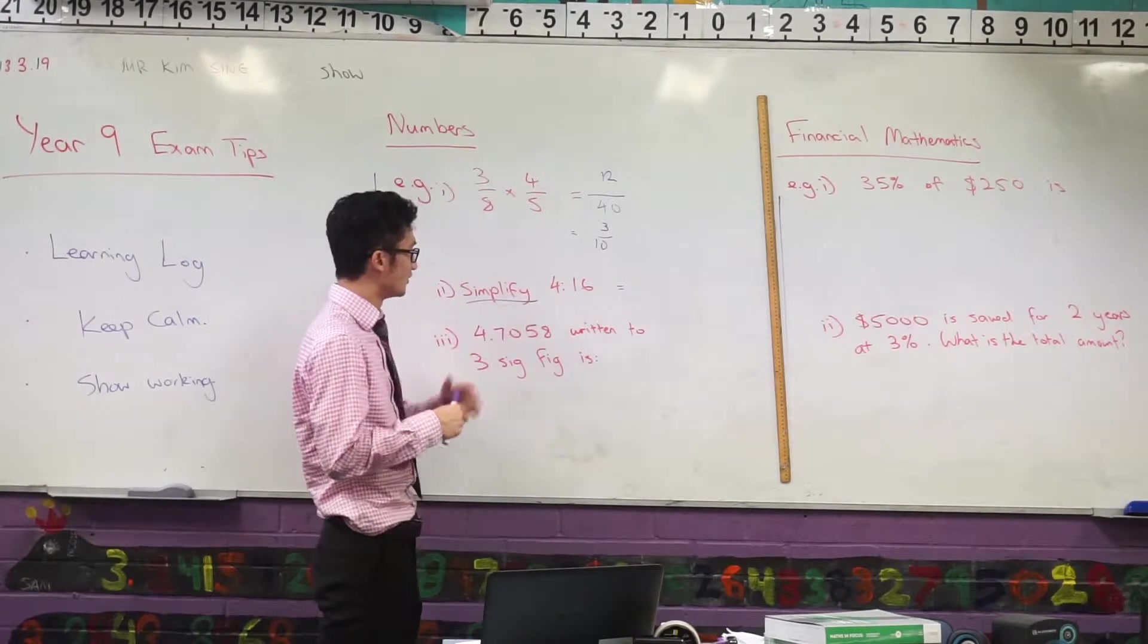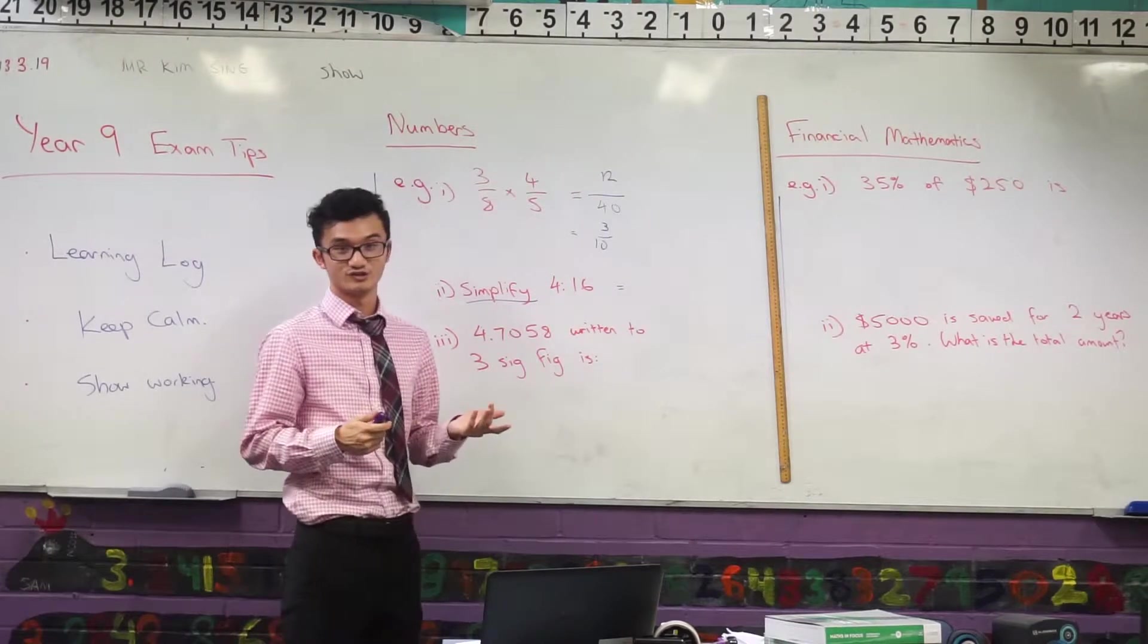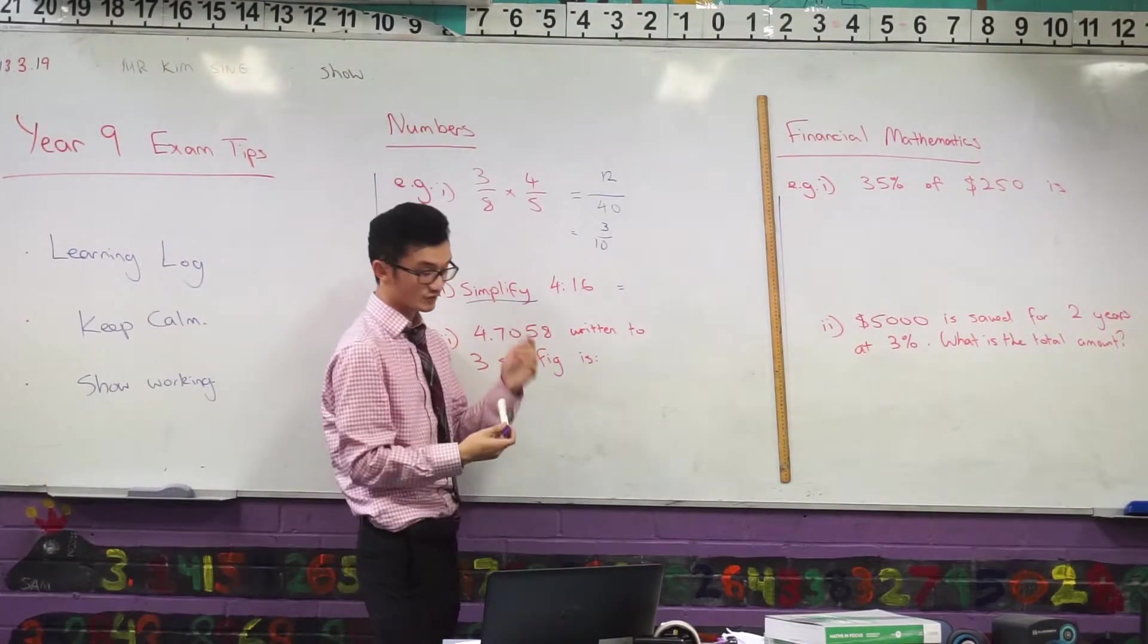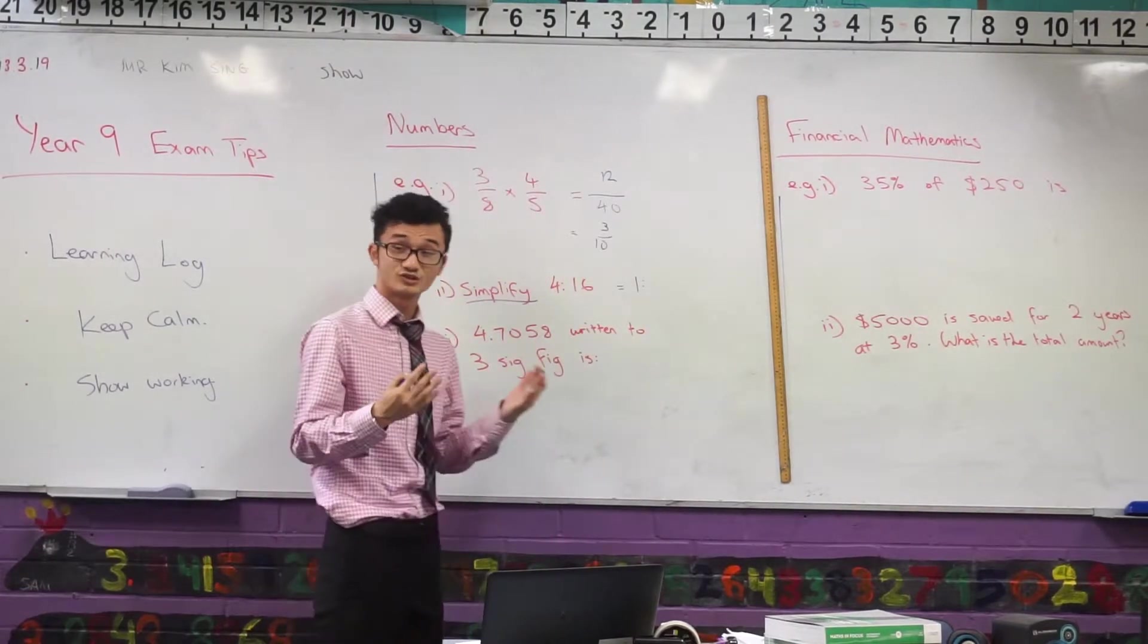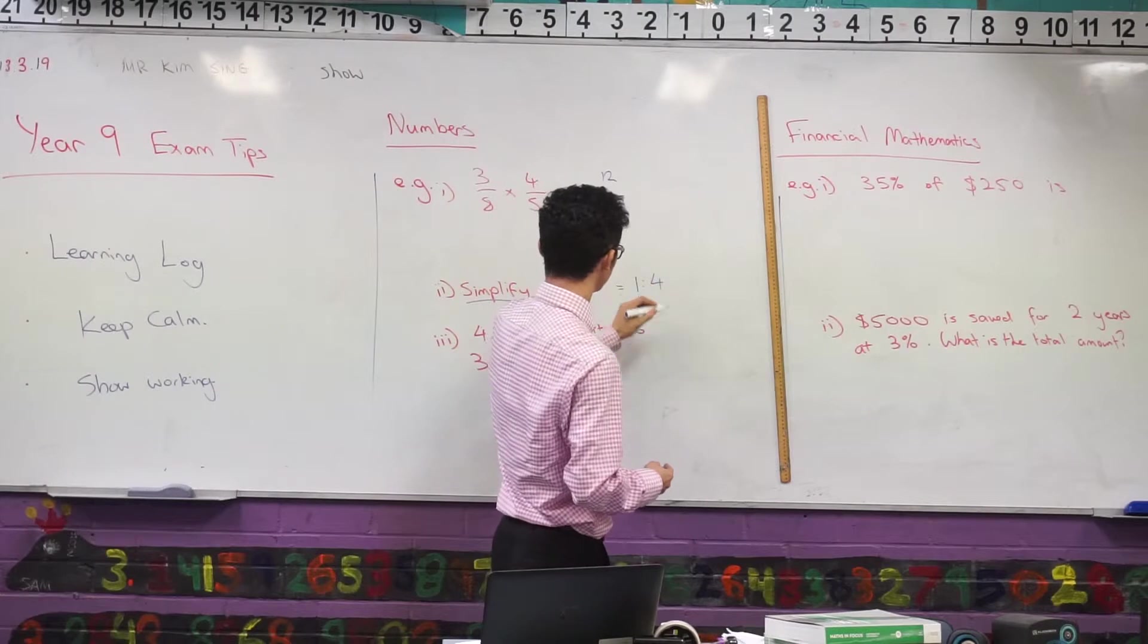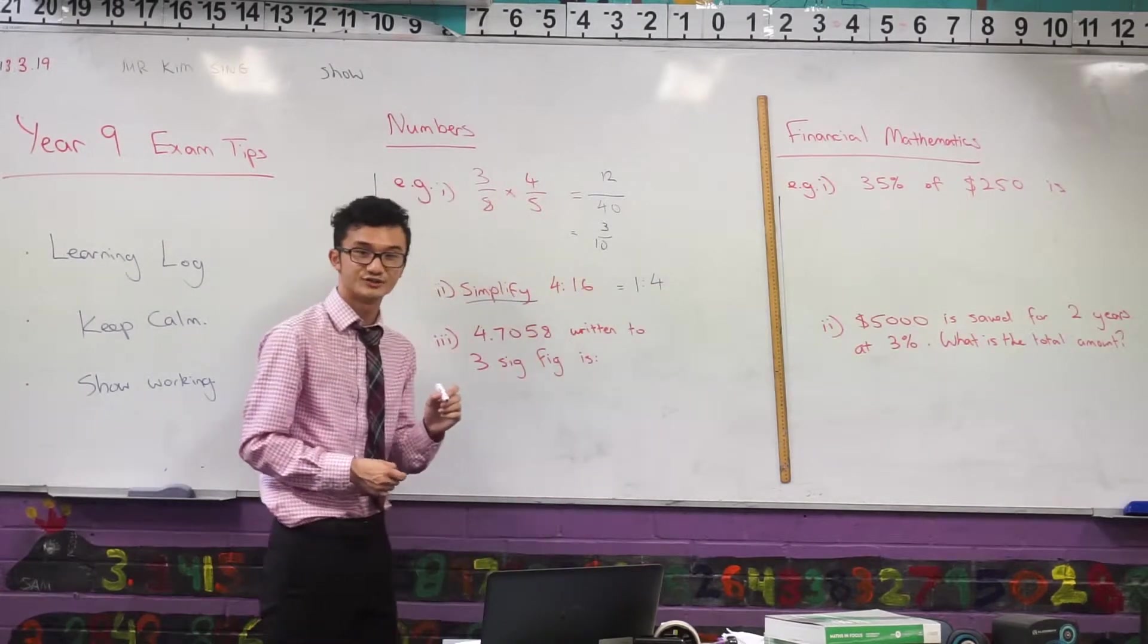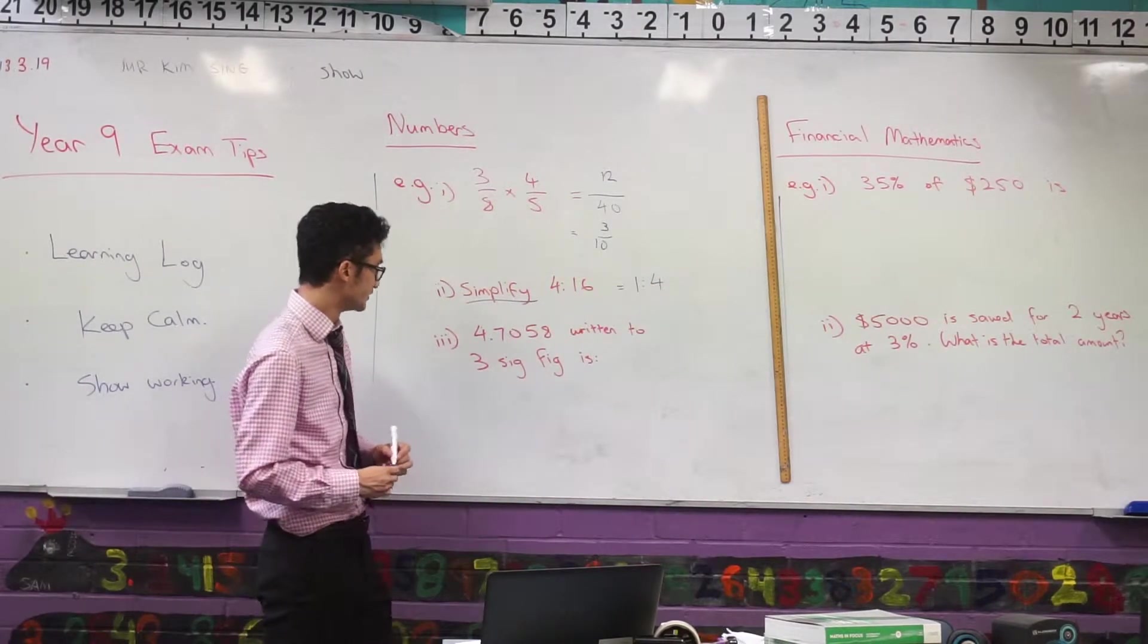So to make them simpler, again kind of similar to your fractions, you want to think what number goes into both of them, 4 and 16. Well, 4 goes in perfectly right? How many times is 4 going to 4? It goes in once. How many times is 4 going to 16? 4 goes in 4 times. That's a ratio of 1 to 4. That's how you can simplify a ratio, thinking about what's in common.